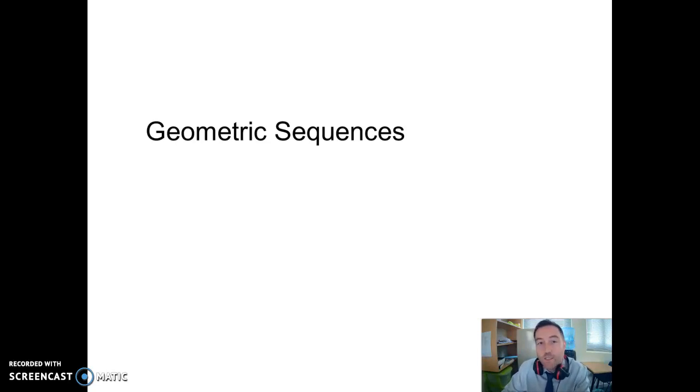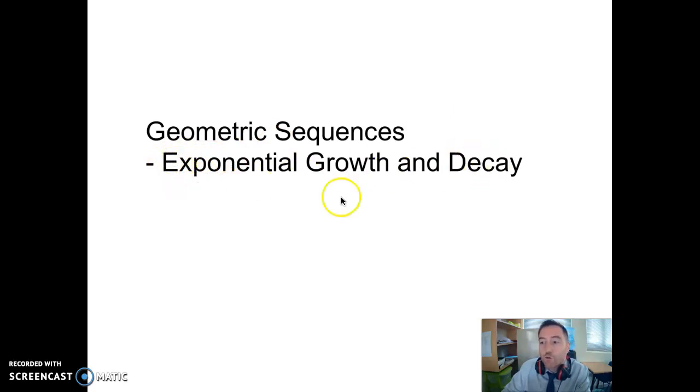Any compound interest calculations could be treated as a geometric sequence. It's also very closely related to exponential growth and decay. The formula we're using here is just as valid for exponential growth and decay, for example the population of rabbits on an island increases by 7% each year.